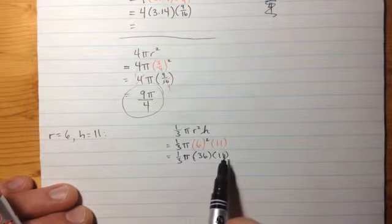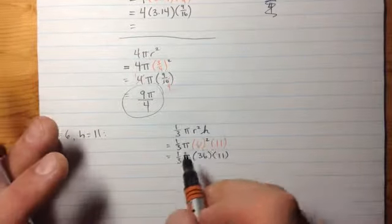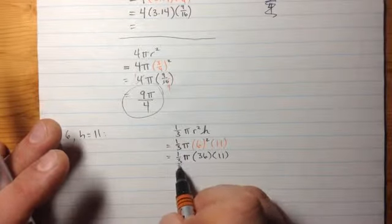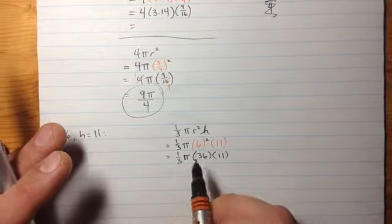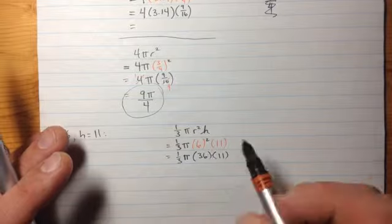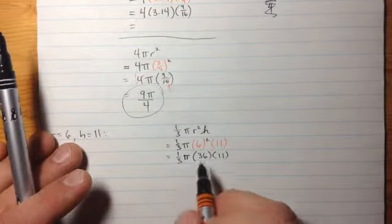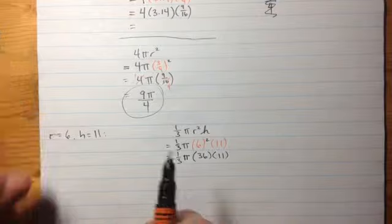Just the brackets to be clear that this is all multiplication. 1 third times pi times 36 times 11. And now let's do a little bit of quick cancelling, or 1 third and 36. That's 36 divided by 3. 1 third of 36. That's going to be 12. And I know 12 times 11 is 132.